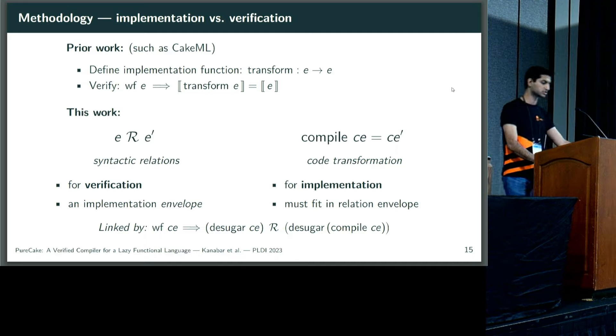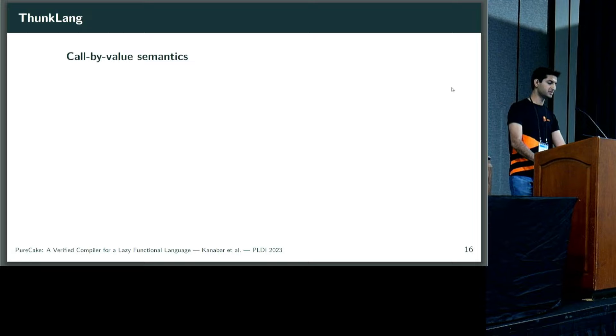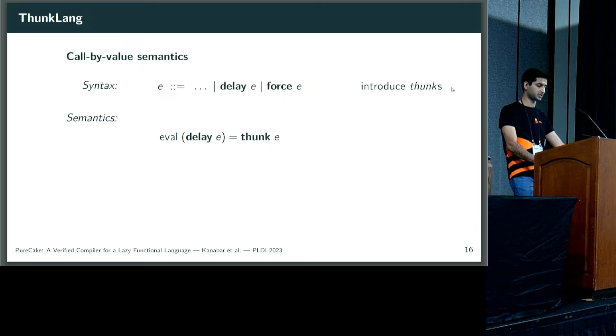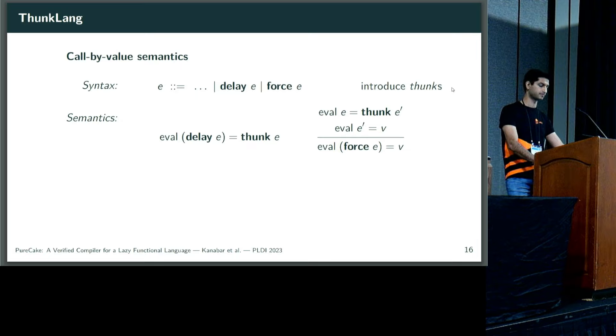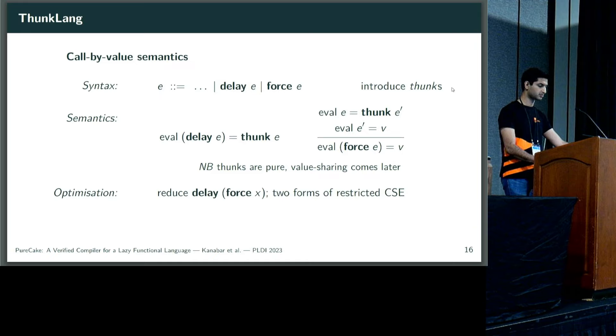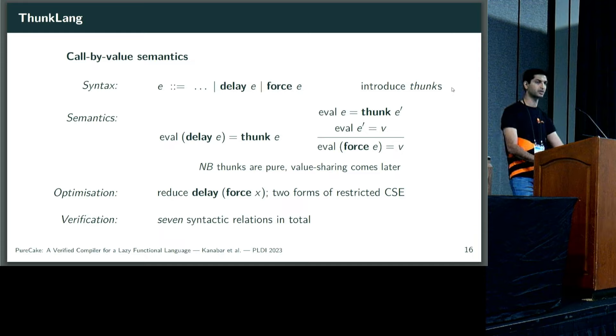So, with that aside done, let's move back to the back-end. The first intermediate language in the back-end is called ThunkLang and it brings an immediate transition to a call-by-value semantics from PureLang's call-by-name. So, naturally, we implement thunks, suspended or delayed computations which can later be forced. The semantics of a delayed computation is to immediately produce a thunk value without ever inspecting the underlying expression. A force is going to undo a delay, so it expects a thunk value as its input, which it will then unwrap and evaluate underneath. And just to note here, these thunks are pure, so re-forcing a thunk is going to re-incur its entire computation. There's no value sharing yet. We're going to implement that later in the compiler. We also perform some optimization in ThunkLang, reducing harmful code patterns, and trying to perform some common sub-expression elimination to reduce repetitively forced thunks. We use seven syntactic relations to verify three compiler passes in ThunkLang, demonstrating how we break things down into smaller steps to ease verification.